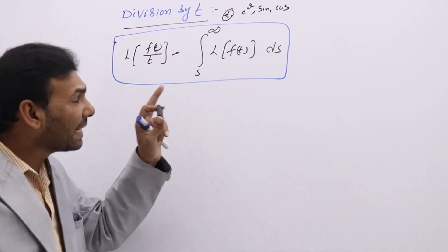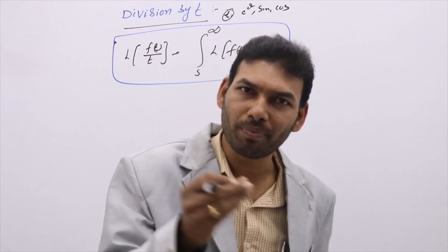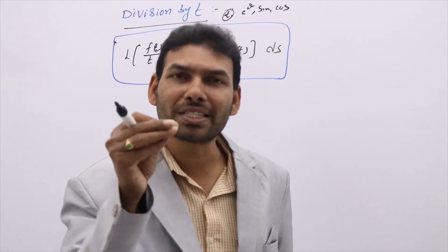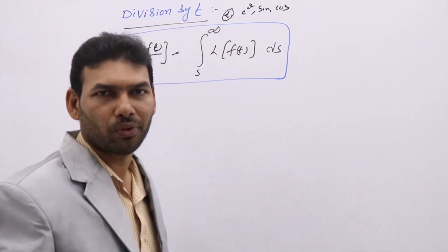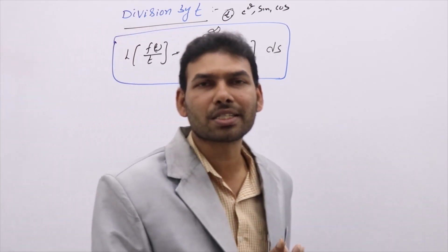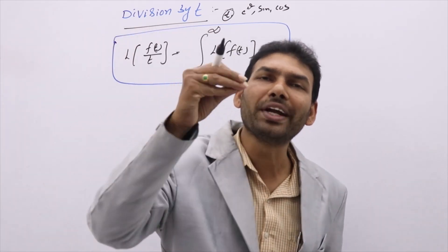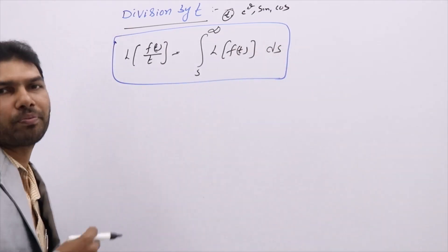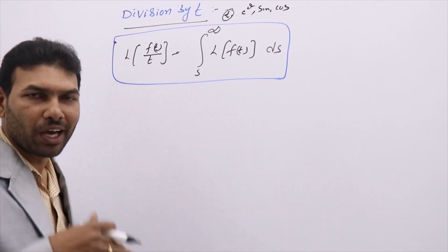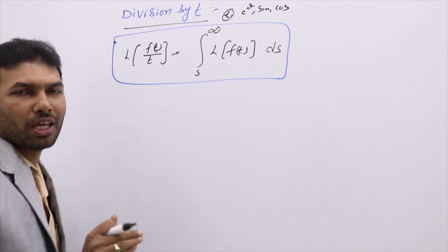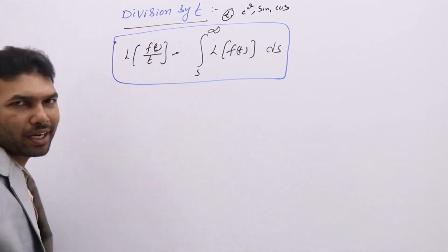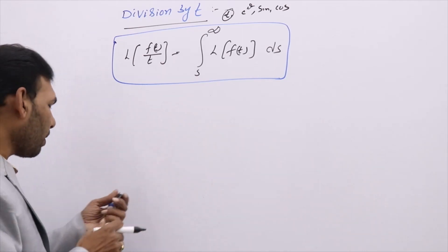To integrate Laplace sine, what integration formula are we going to apply? To integrate Laplace cosine, what integration formula do we use? You don't need to recall all integration formulas — you need to learn just a few that we are going to apply before applying Laplace. If you have sine, we apply one integration formula; if you have cosine, a different one; if you have e^(at), another particular integration.